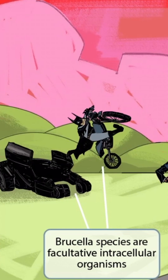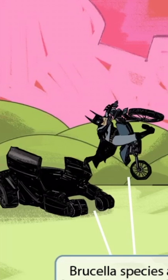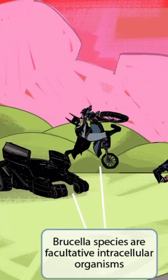Let's return our attention to Bruce Wayne and discuss Brucella in more detail. Brucella species are facultative intracellular organisms, which means they can survive inside or outside of cells. To help you remember this, we've shown Bruce Wayne ejecting his dirt bike out into the open world. He was just inside of his Batmobile, but now he's outside — he thrives inside the Batmobile and outside of it on his bike, just like a facultative intracellular organism can survive inside or outside of cells.